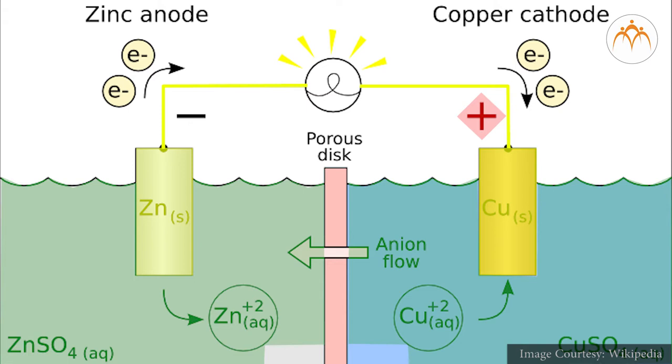Zinc dissolves from the zinc plate leaving behind electrons, which makes the plate negative. The electrons move through the wire from zinc plate towards copper. This constitutes the electric current which continues until zinc is eaten away or the acid is used up.